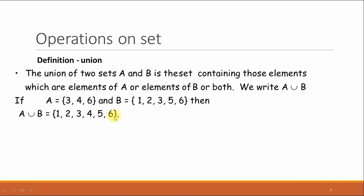Since the union of these two sets contains those elements which are elements of A or elements of B or elements of both sets A and B, the union A and B contains the elements 1, 2, 3, 4, 5, and 6.